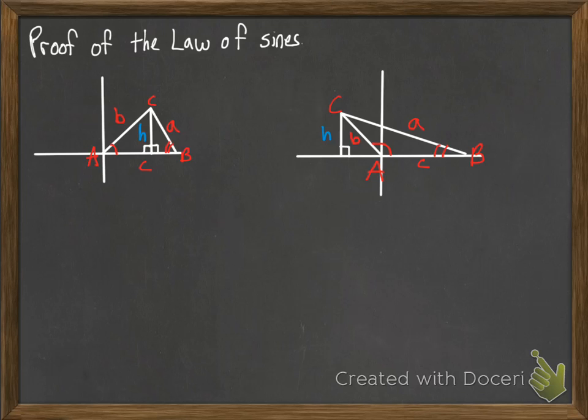What I've drawn here are two prototype triangles, because we have really two possibilities with a triangle. We can have our triangle being an acute triangle. Here I've drawn it with angle A in standard position.